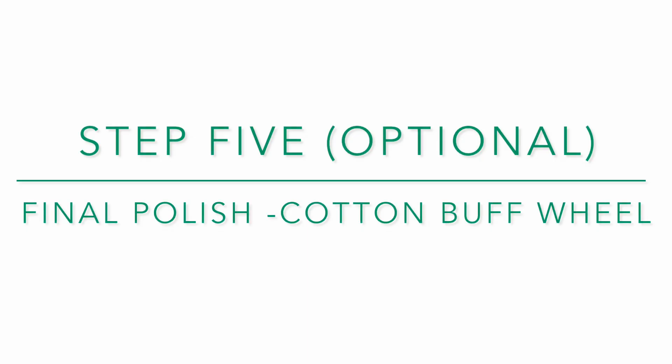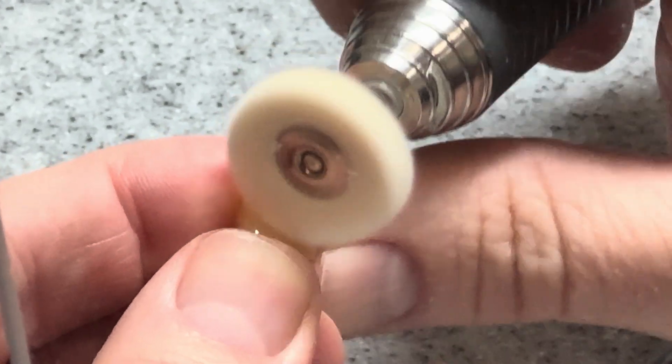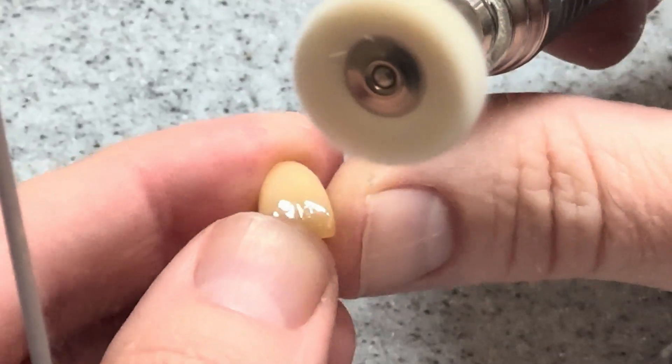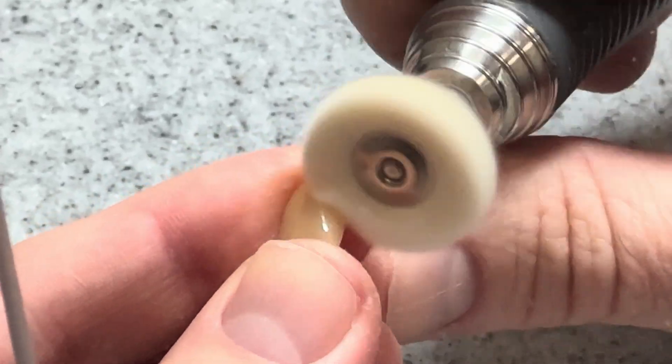Step five, a final polish. This final step is not necessary, but if you choose to use a cotton buff wheel it will give your final restoration an ultra high shine.